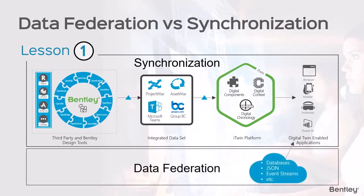Data federation, on the other hand, is the concept of connecting outside data sources such as databases, JSON, and event streams with the i2in platform to further augment our digital twin. This means we can connect to data sources living elsewhere in the cloud, thus enriching our digital twin beyond just design data — for example, by providing real-time IoT updates. We're going to cover data federation in more detail in a later chapter in the course.